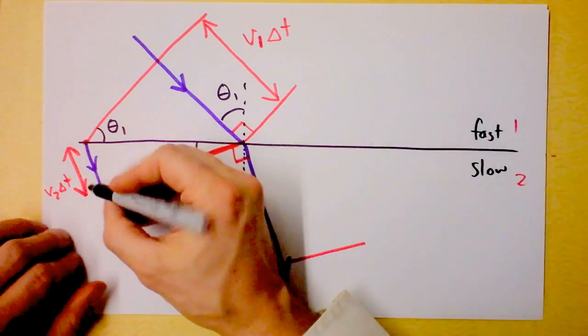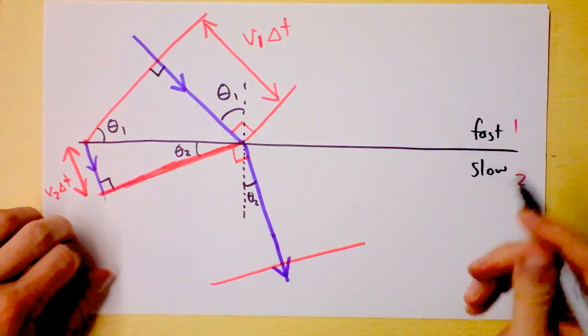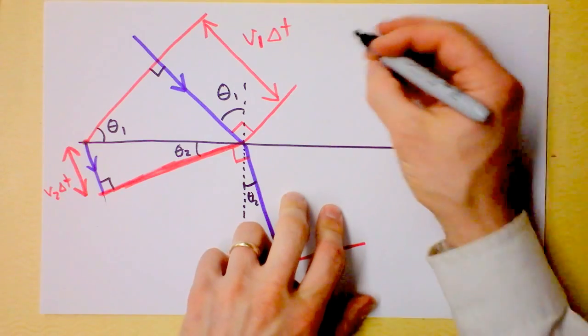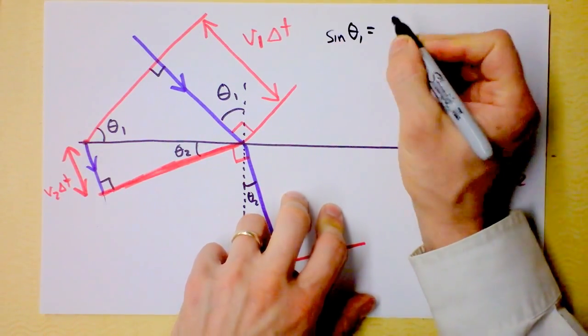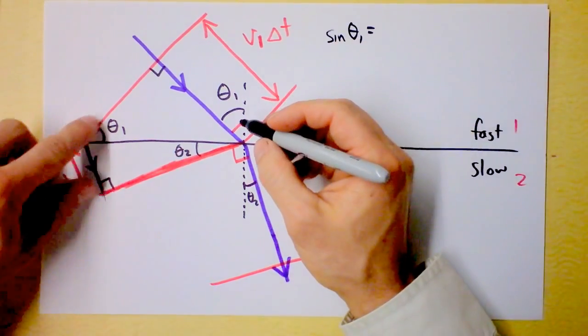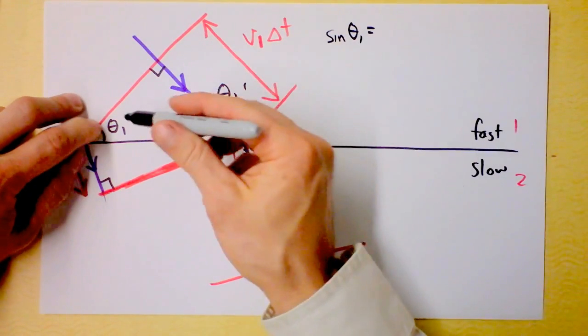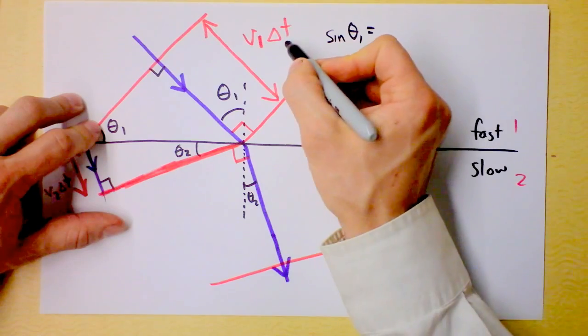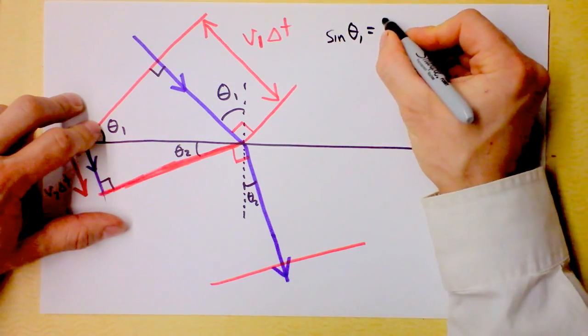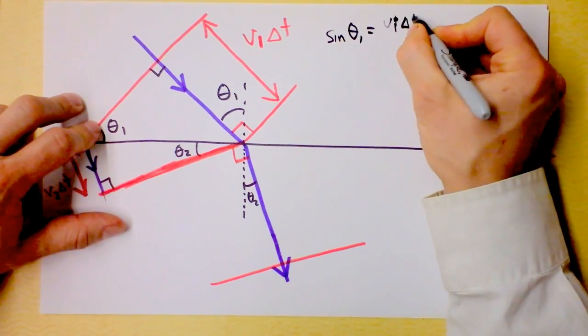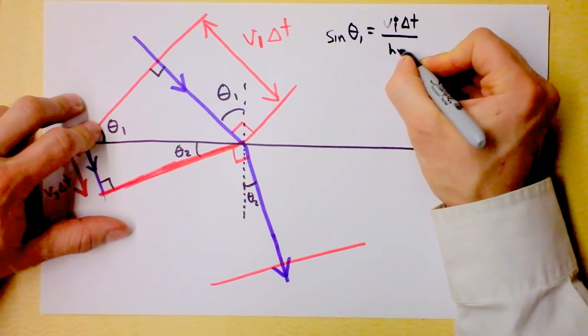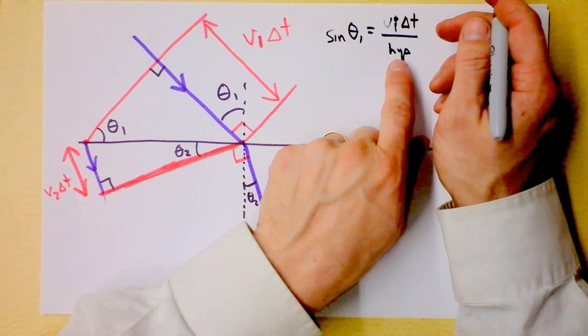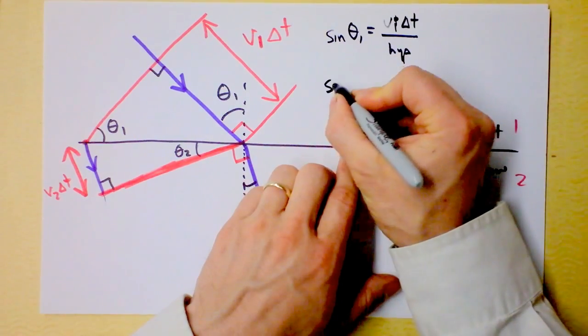But here's my point. If this is a right angle and this is a right angle, of course it is, because those are right angles also, then I can make the statement that the sine of theta 1, sine of theta 1, here's theta 1, and it's in a triangle. So, I'm going to say that it's the opposite over the hypotenuse. That's this sucker right here, v1 times delta t, divided by the hypotenuse. And this is the sine of theta 2.